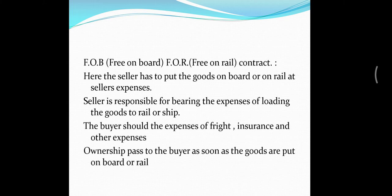Under FAS, the buyer arranges insurance and the seller's duty is only to board the goods to the ship notified by the buyer. Under FOB/FOR, the seller must find a ship or rail and bear all expenses until boarding. The remaining expenses, such as freight, insurance, and all other expenses, should be met by the buyer.